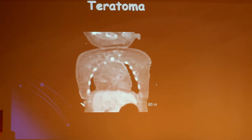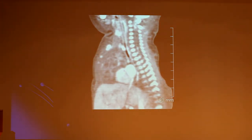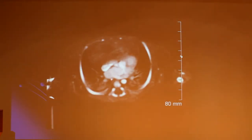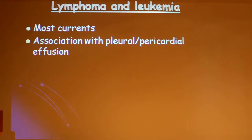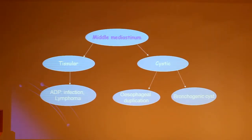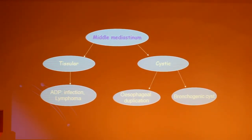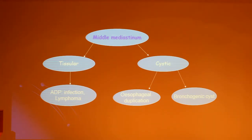This is an example of a teratoma — you can see calcification. The lymphoma and leukemia are the most common masses of the mediastinum. Their association with pleural and pericardial effusion is common. Masses could be solid or cystic. Solid masses include adenopathy and infection or lymphoma. The cystic masses could be thymic cysts or bronchogenic cysts.